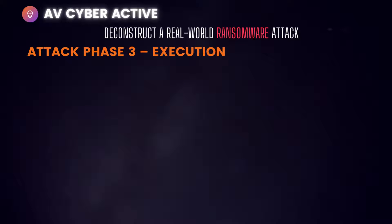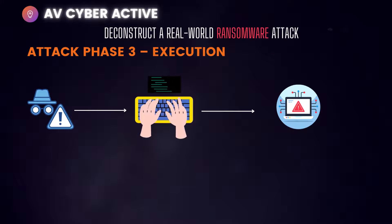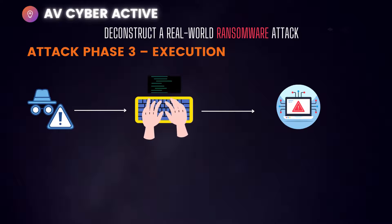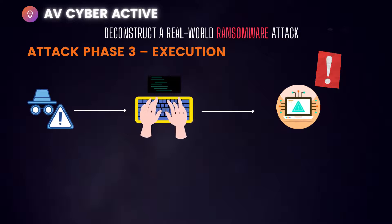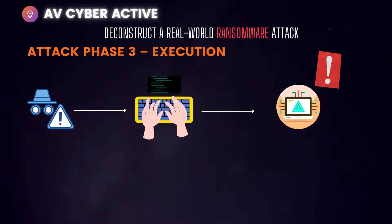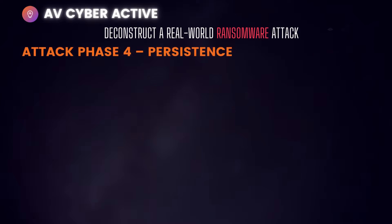Phase three is Execution. Once the initial foothold is established, attackers dig through output directories to gain information like IP addresses and hostnames. If the main domain controller is not secured properly, unauthorized access can be devastating. Hackers can exploit vulnerabilities in Kerberos — the default authentication protocol for Windows — to pose as a legitimate user and move through the network undetected. Attacks such as Golden Ticket and Pass-the-Hash are techniques worth researching.